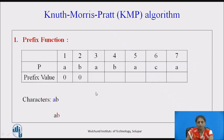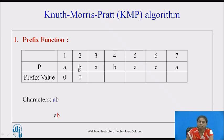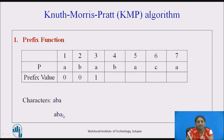Consider the pattern ABABAC. The first character always has prefix value 0 since nothing precedes it. For AB: prefix is A and suffix is B — they don't match, so prefix value is 0. For ABA: the highest prefix AB and suffix BA don't match; deleting one character gives prefix A and suffix A — they match, so prefix value is 1. For ABAB: prefix ABA and suffix BAB don't match; deleting one gives prefix AB and suffix AB — two characters match, so prefix value is 2.